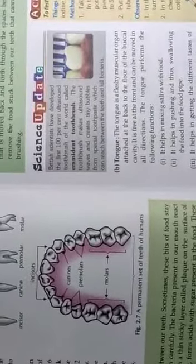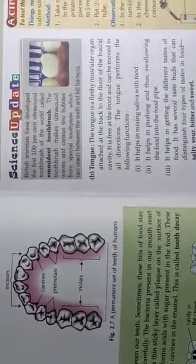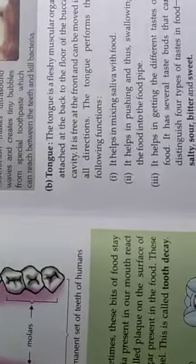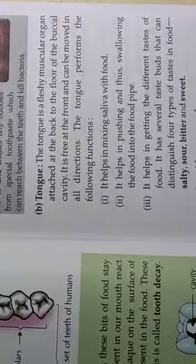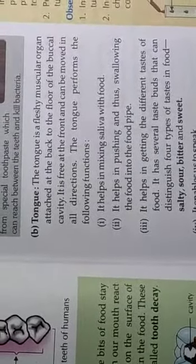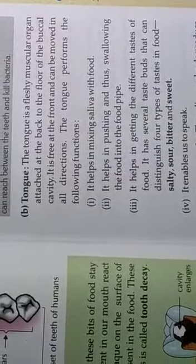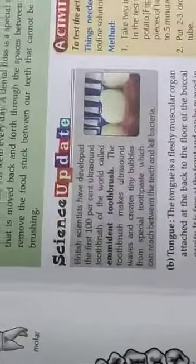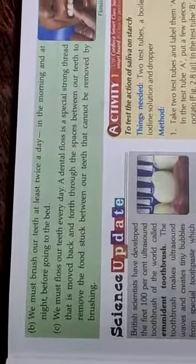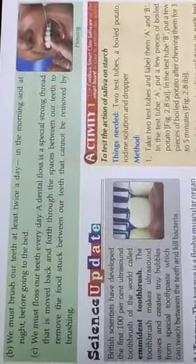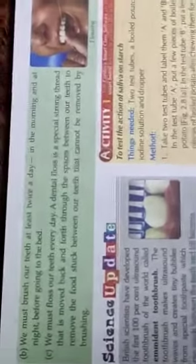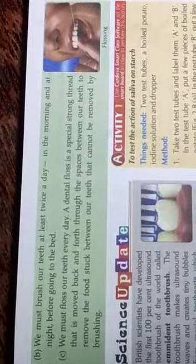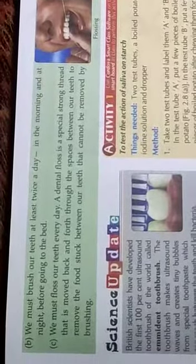Number 3 is the salivary gland. These glands produce saliva. Saliva contains an enzyme called amylase that breaks down the starch present in the food into sugars. It also makes the food wet and slimy, so that it can be easily swallowed.